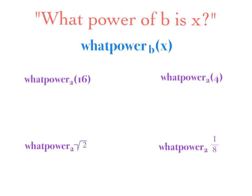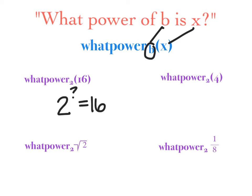So let's get this written down nicely. What power of b is x? And that's how we like to say this. What power of b is x? So when you go to read this out loud, you're saying: what power of 2 is 16? So this little b is what we want to read — of b is x. What power of 2 is 16? And again, you can kind of make the little swirl for yourself and go around.